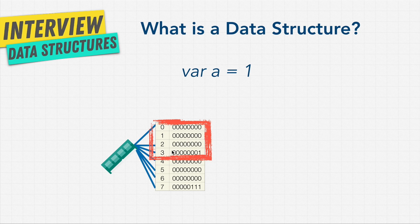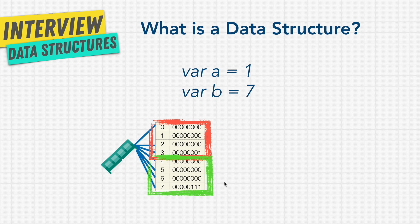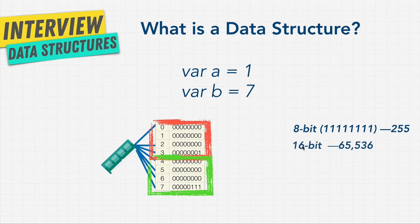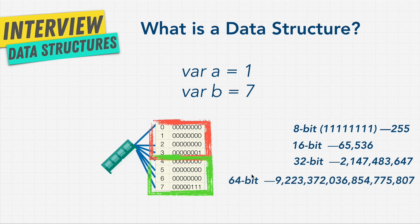Why 32 bits? Because eight bits is one byte, and 8 times 4 equals 32 bits. We can store 32 bits of information. The number one — zero zero zero zero zero zero zero zero zero zero and one — is stored in memory at addresses zero, one, two, three. If we have another variable b equals seven, we store it in the next block over in RAM. An 8-bit system can hold 255 values, a 16-bit system holds more, and 32-bit and 64-bit systems hold increasingly more.